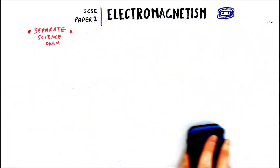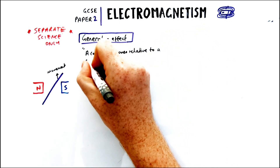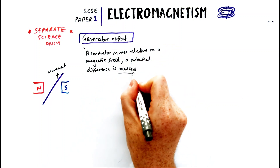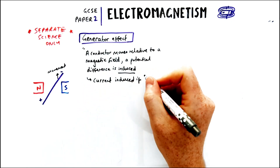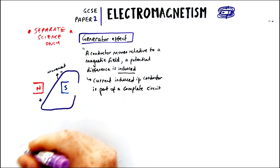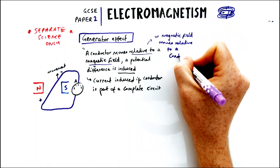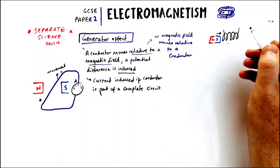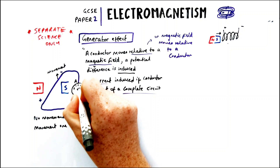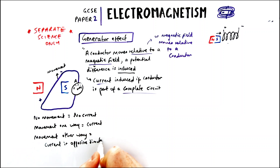Next let's talk about the generator effect, which is on the separate science only syllabus. When a conductor moves in a magnetic field, we get a potential difference being induced — this is the motor effect in reverse: instead of producing movement, we put movement in and get electric current or potential difference out. We only get current induced if the conductor is part of a complete circuit. This can also occur if a magnetic field moves relative to a conductor, like a magnet being pushed into a coil of wire. Moving in one direction gives current one way; reversing the movement reverses the current.